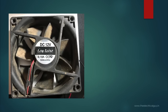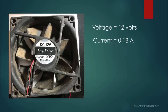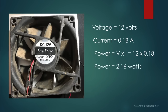As you can see in the figure, this is a picture of a DC fan. On the fan it is mentioned: voltage 12 volts and current 0.8 ampere. Using this data we will calculate the power required by this fan. Power equals voltage multiplied by current, so power equals 12 into 0.8, which gives us 2.16 watts. This indicates 2.16 watts of power will be consumed by this fan.